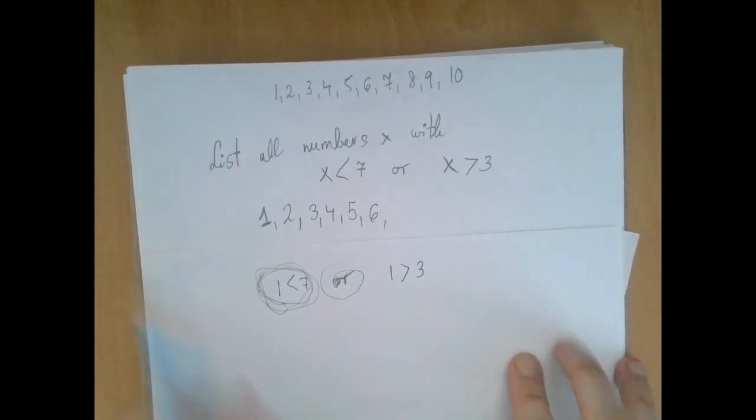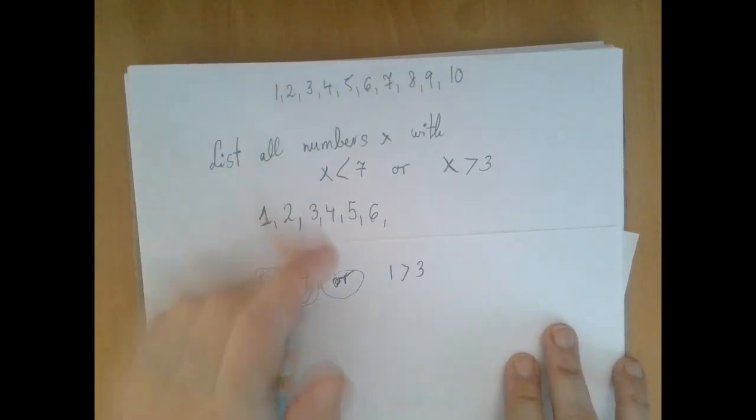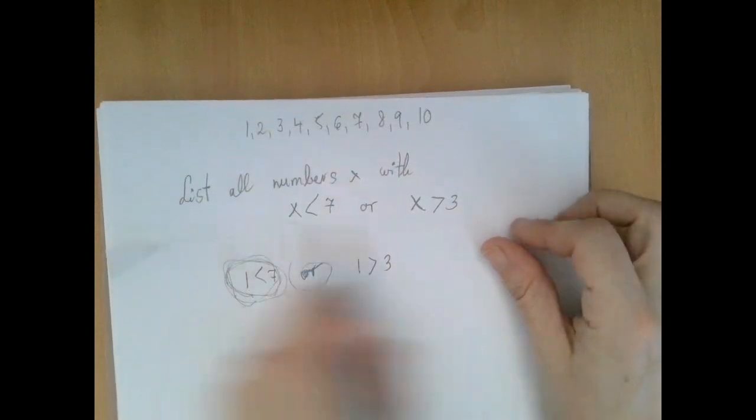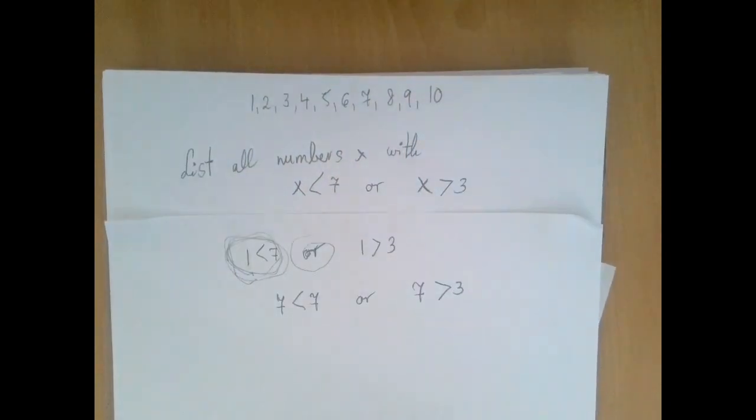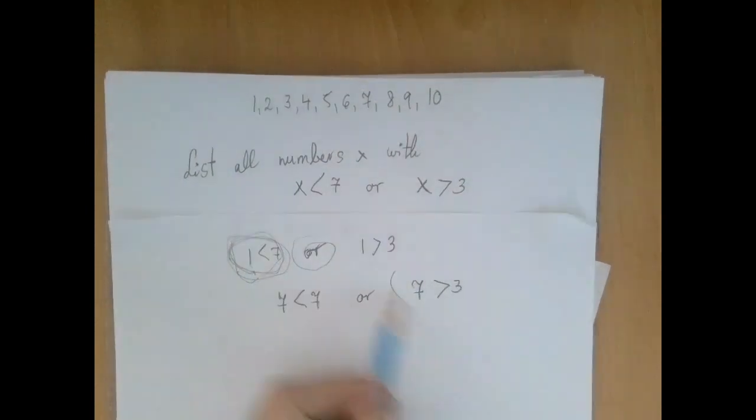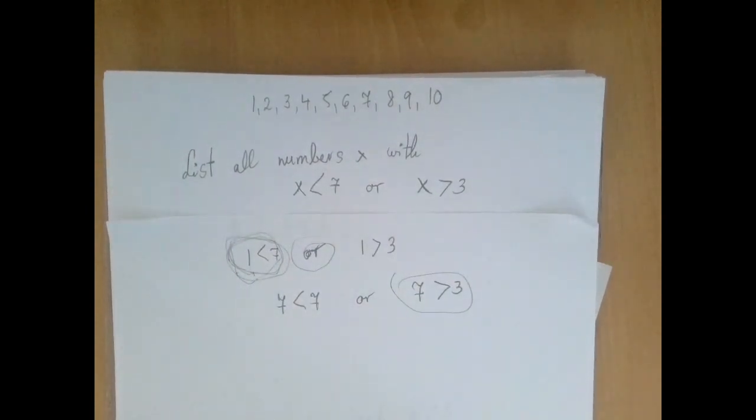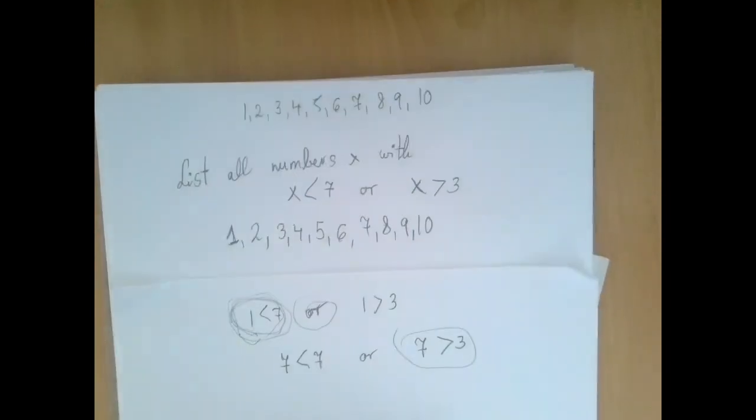So now let's look at 7. So when we put 7 into this statement, we get 7 is less than 7 or 7 is greater than 3. Now the second statement is true. And not only it is true, but it will remain true for 8, 9, and 10. So we found 7, 8, 9, 10.